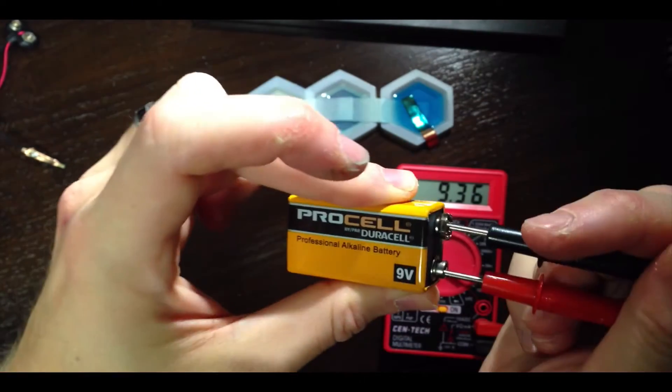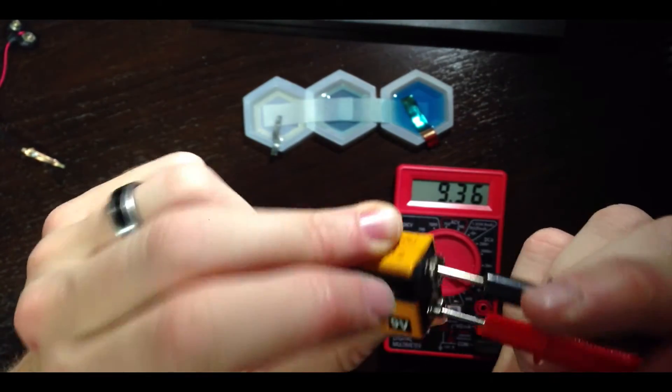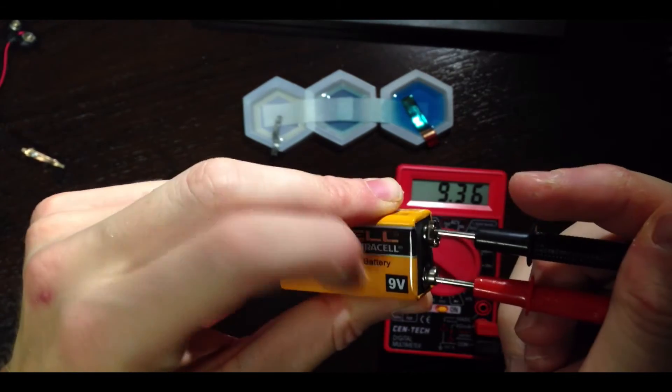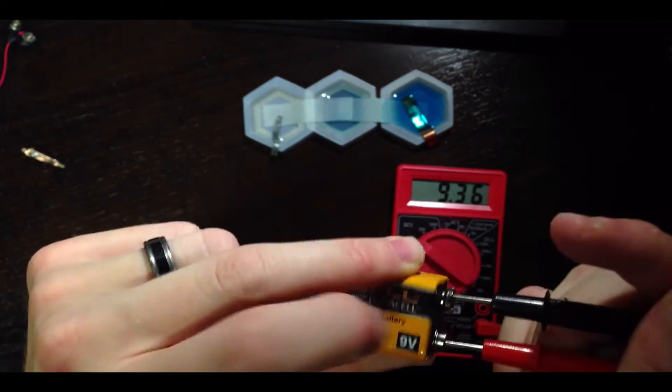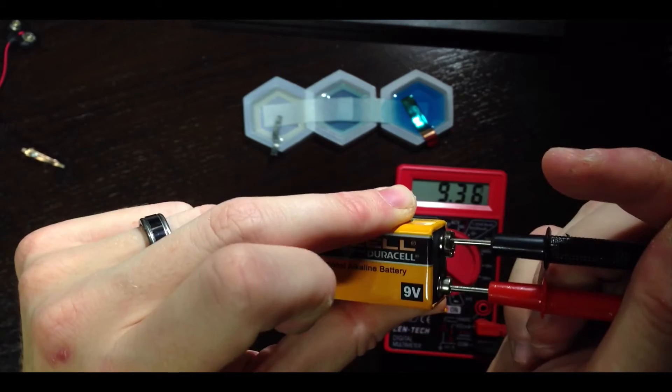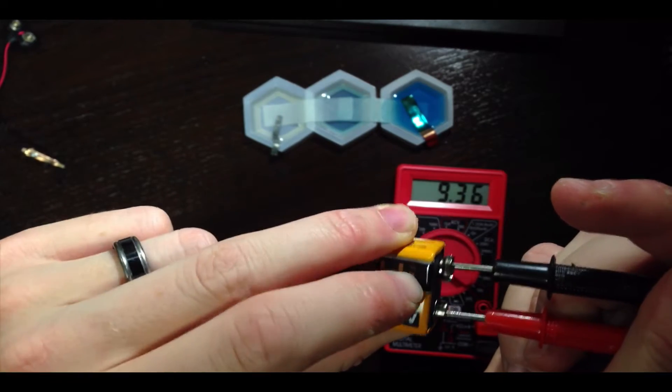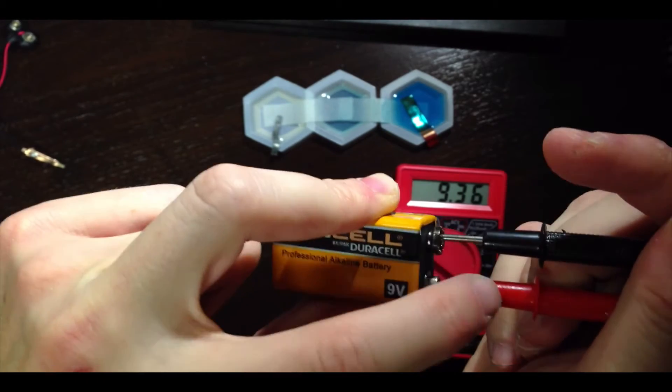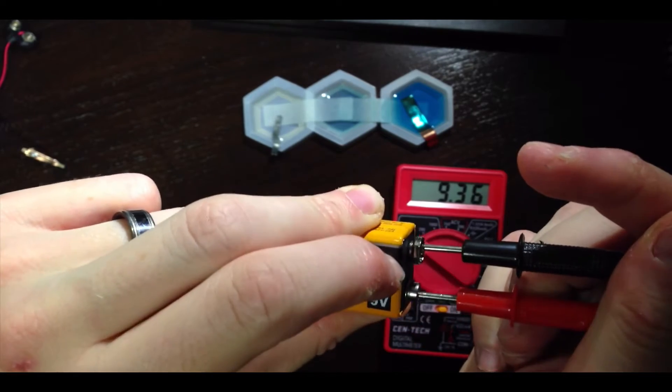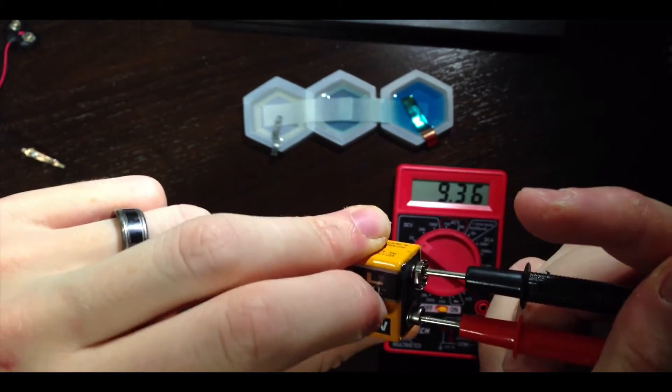So there we have it. I've got the negative terminal connected to the negative lead of the multimeter, positive terminal connected to the positive lead of the multimeter, and we're observing a positive voltage. In the language of galvanic cells, red goes to the cathode, and black to the anode in order to observe a positive voltage.